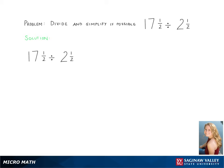Here we are solving 17 and 1 half divided by 2 and 1 half. The first step in this problem is to change the mixed numbers into improper fractions. Doing so gives us 35 halves divided by 5 halves.